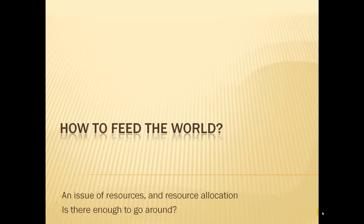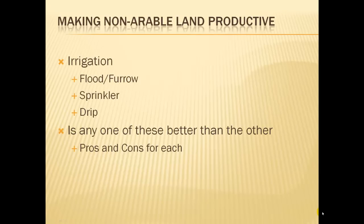When we start looking at that, we have to look at non-arable land. This relates to your previous unit on soils — not all soils are perfect, and many have drawbacks on what they can produce. A lot of agriculture today takes place on non-arable land unless you bring in an irrigation component. With plenty of sunshine, nutrients, and water, crops will grow, and irrigation makes that possible in many areas of the world.